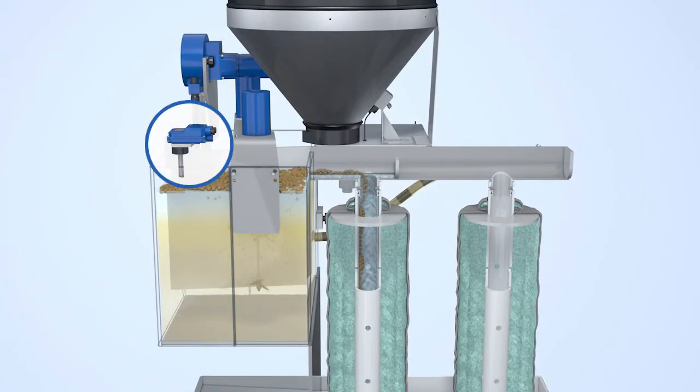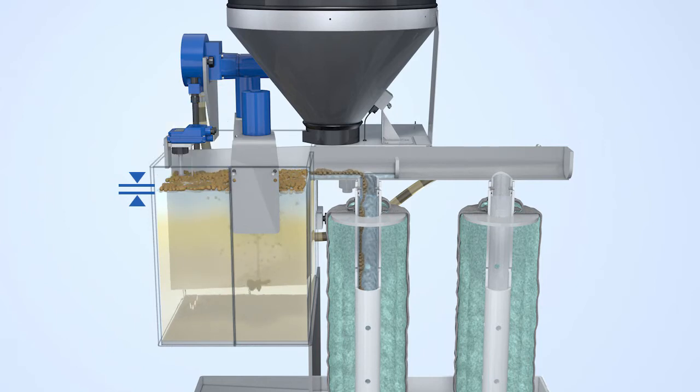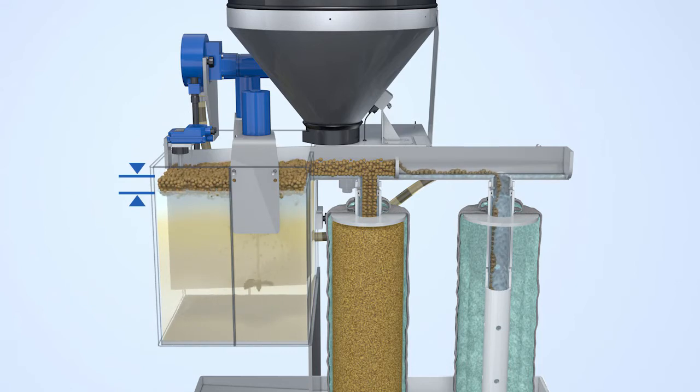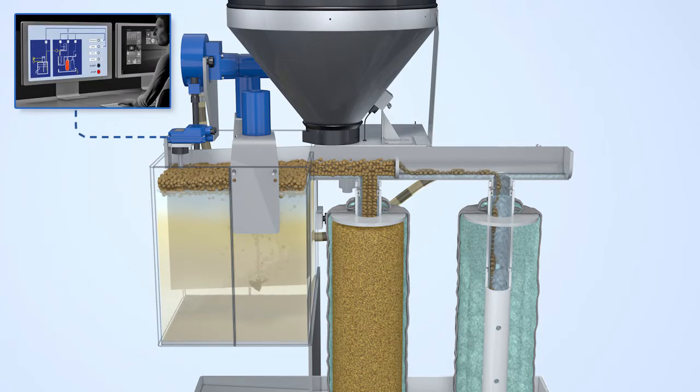An additional sensor monitors the filling level in the reaction chamber. This sensor identifies the optimum filling level and the time until the filter next needs changing, transmitting this data to a control room, for example.